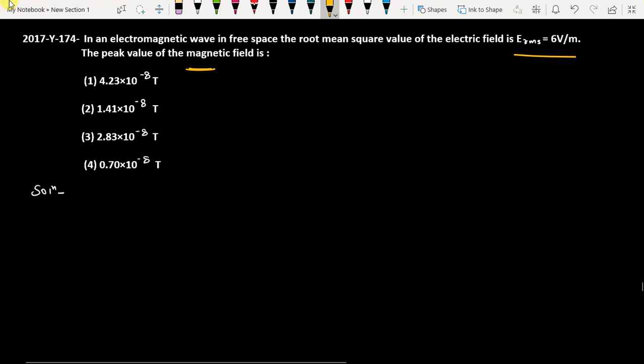This question is a simple formula-based question. We know that E_0 by B_0, the peak value of the electric field and peak value of the magnetic field, the ratio of these two will give us the speed of light.